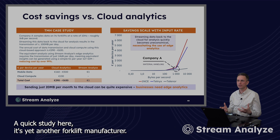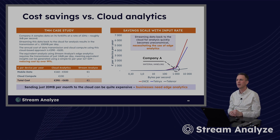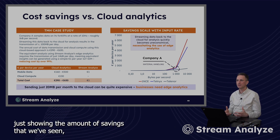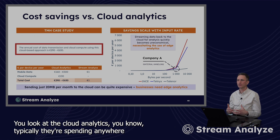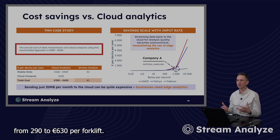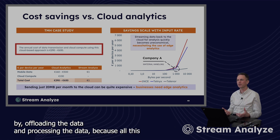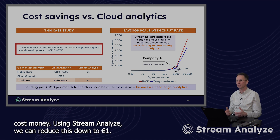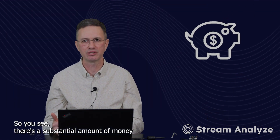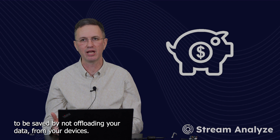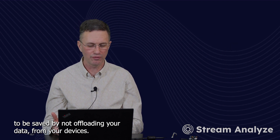A quick case study here — yet another forklift manufacturer. Just showing the amount of savings we've seen by not having to offload all your data. You look at cloud analytics — typically they're spending anywhere from 290 to 630 euros per forklift by offloading and processing the data, because all this costs money. Using Stream Analyze, we can reduce this down to one euro. So you see there's a substantial amount of money to be saved by not offloading your data from your devices.